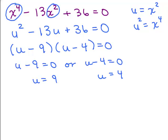Here's where many people make their mistake — they think they're done. But you've only solved for u, and the original problem had no u in it; you're trying to solve for x. After solving for u, you go back and remember that u stands for x squared. Replace u with x squared: so x squared equals 9, or x squared equals 4. Now solve for x.